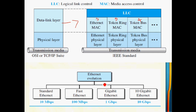There are four Ethernet standards. The first is Standard Ethernet at 10 Mbps. The second is Fast Ethernet at 100 Mbps. The third is Gigabit Ethernet at 1 Gbps. The fourth is 10 Gigabit Ethernet at 10 Gbps.